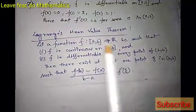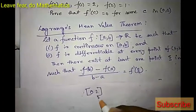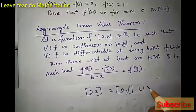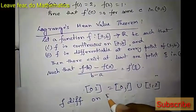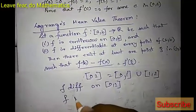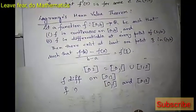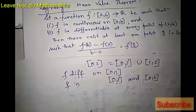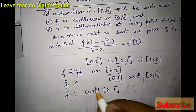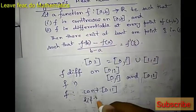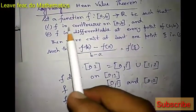Now, here it is given that f is differentiable on closed interval [0,2]. Let us divide the closed interval [0,2] into two parts: [0,1] and [1,2]. Since f is differentiable on [0,2], f is continuous there. So f is continuous on [0,1] and differentiable on open interval (0,1). Thus f on [0,1] satisfies the conditions of Lagrange's Mean Value Theorem.